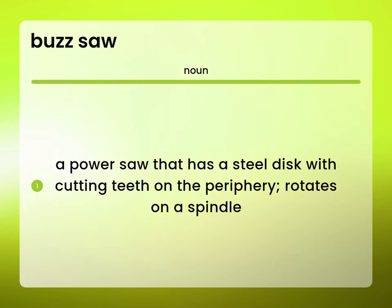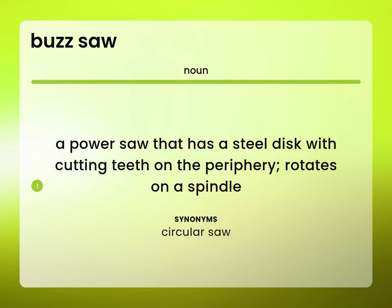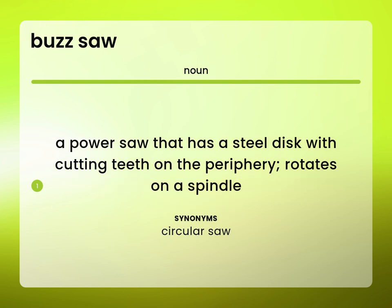A power saw that has a steel disc with cutting teeth on the periphery, rotates on a spindle. Circular saw.